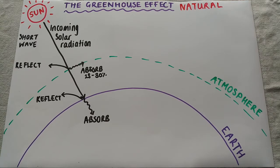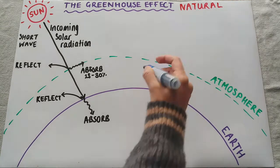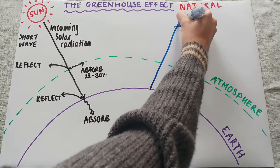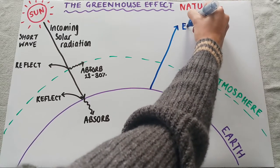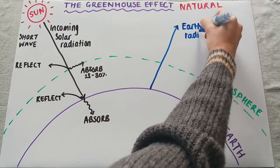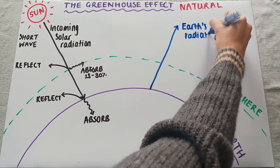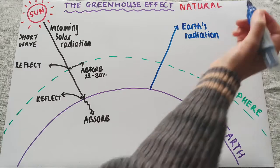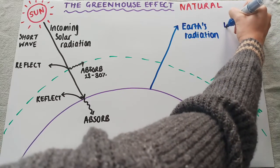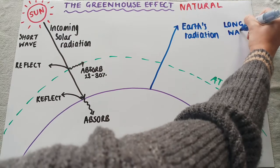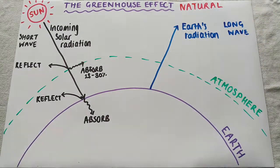The earth also emits its own radiation — we'll draw this in blue. This is earth's radiation. The difference between this and solar radiation is that earth's radiation is long wave, whereas solar radiation is short wave.